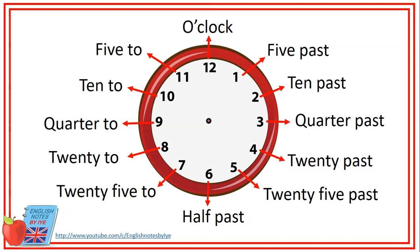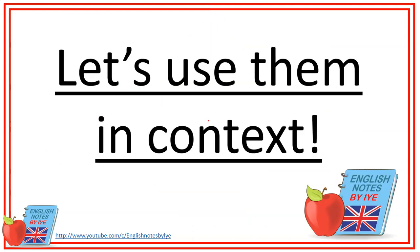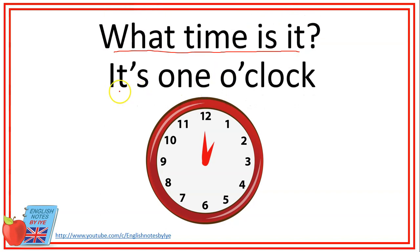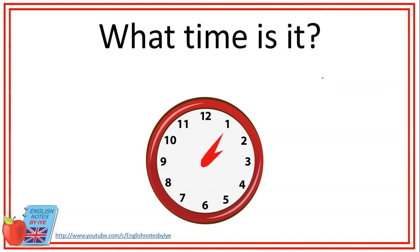These expressions are used to say the time in British English. Now let's use them in context. The question to ask about the time is what time is it? In the answer, we say it's one o'clock. We use the subject pronoun it and the verb to be is, or its contraction it's. When we have an hour with zero minutes, we use o'clock for both American and British English.